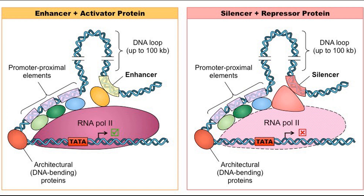Each element contained within such a module is a binding site for transcription factors, called activators and repressors, respectively for enhancers and silencers. Even though these are often located far from each other, the transcription factors bound to silencers and enhancers still interact directly with RNA polymerase or other proteins at a transcriptional start site, since DNA is able to loop around onto itself, bringing these close together.